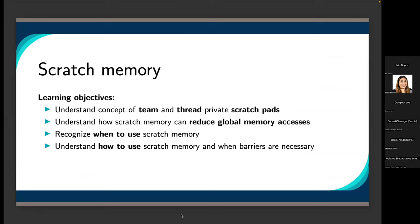We're going to talk about scratch memory in Kokkos. We want to cover two types of use cases: team and thread private scratch pads, and using scratch memory to reduce global memory access by caching commonly used data between threads. We also want to recognize when and how to use scratch memory, and what we need to add in terms of barriers and different things like that.